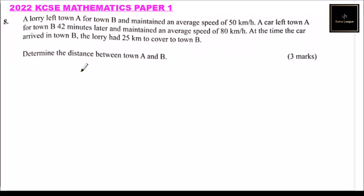This is 2022 KCSE Mathematics Paper 1, number 8. We are told a lorry left town A for town B and maintained an average speed of 50 kilometers per hour. A car left town A for town B 42 minutes later and maintained an average speed of 80 kilometers per hour. At the time the car arrived in town B, the lorry had 25 kilometers to cover to town B. Determine the distance between town A and town B.